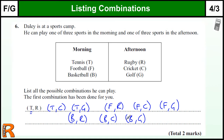If you get all of them right, you get two marks, but you need at least five correct to get one mark. Every extra incorrect or repeated answer will lose you marks.